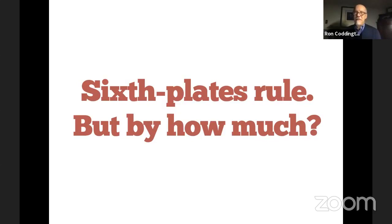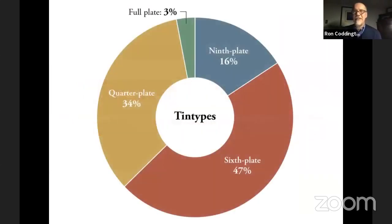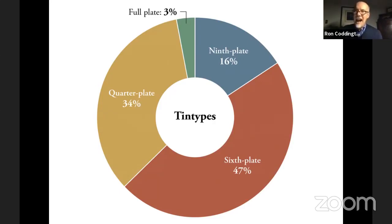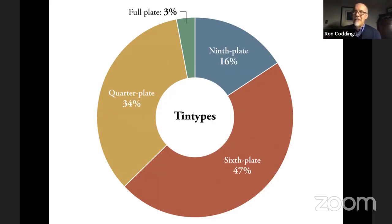I became curious to find data to set against my experience-based idea. Thanks to digitized back issues of Military Images, I went through 250 tintypes and discovered that six plates do rule — but maybe not by as much as you think. About 47% were six plates, a quarter plate represented about a third of all tintypes, ninth plates came in at roughly 16%, and about 3% were full plate tintypes.